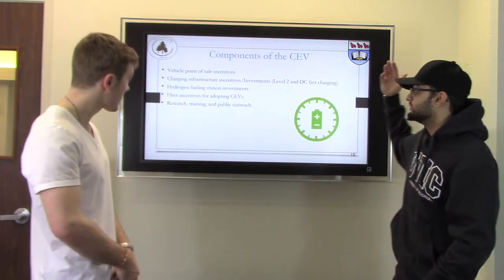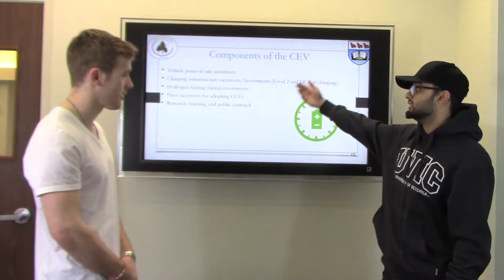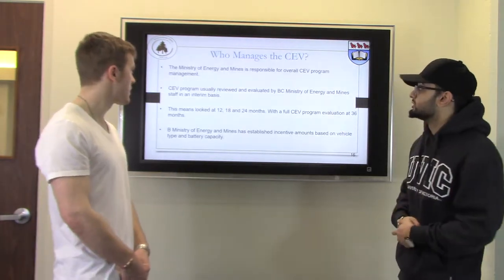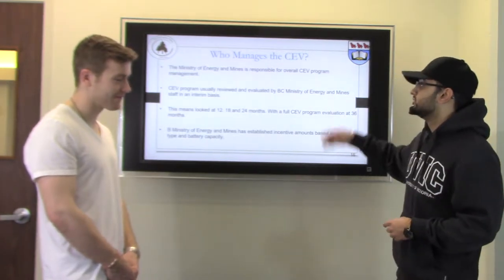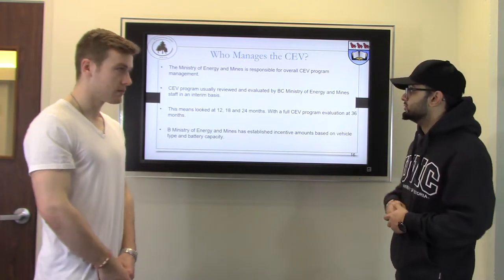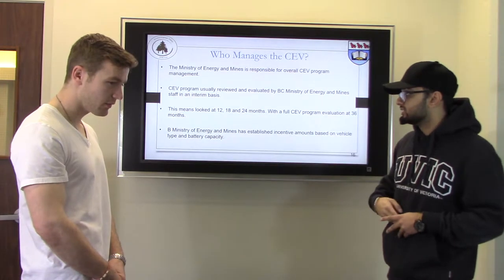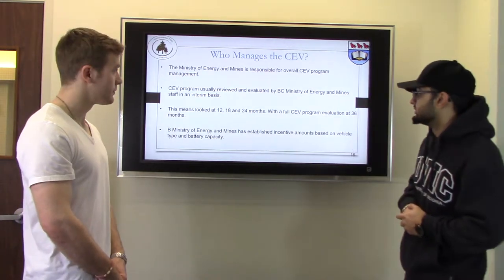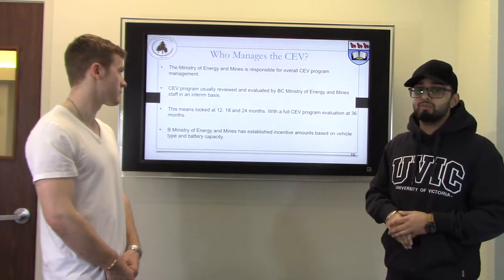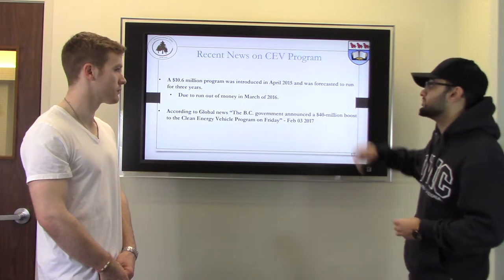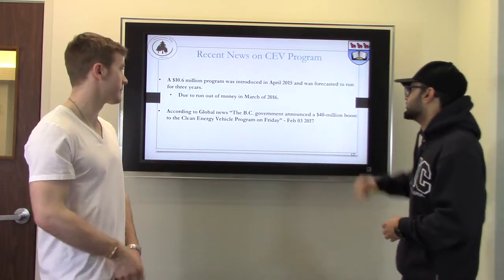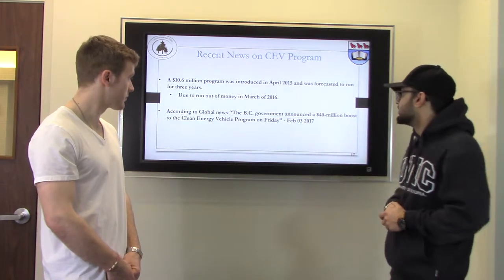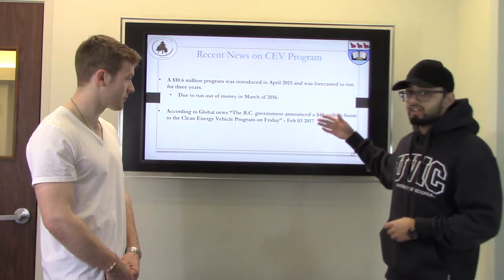The CEV program components include vehicle point-of-sale incentives, charging infrastructure incentives, hydrogen fueling station investment, fleet incentives for adopting CEVs, and research, training, and public outreach. The BC Ministry of Energy and Mines manages the program, reviewing it at 12, 18, and 24 months, with a full evaluation at 36 months. A $10.6 million program introduced in April 2015 was forecasted for three years but was due to run out by March 2016. The BC government then announced a $40 million boost to the program on February 3, 2017.